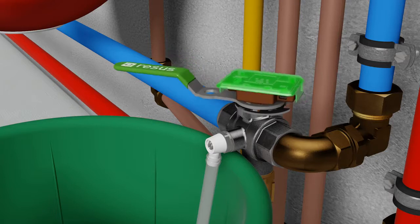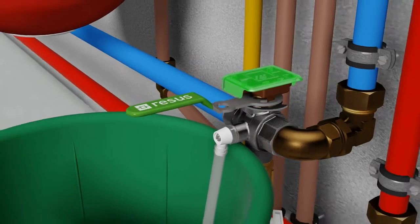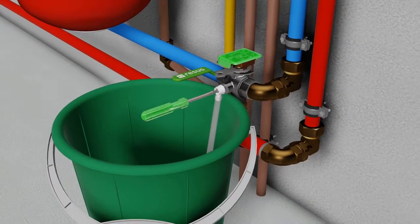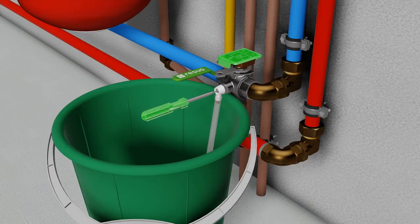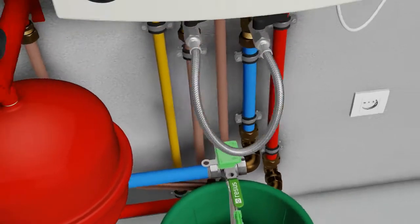Closing the valve isolates the expansion vessel from the system so that now it can safely be drained. Once all the water is out, the pressure on that side has come to zero.